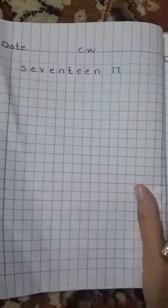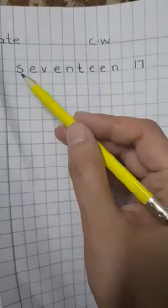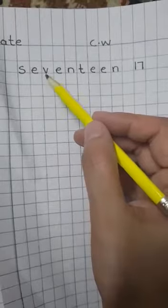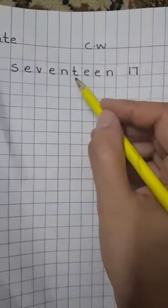So, 17: S-E-V-E-N-T double E-N, seventeen. Write it down: S-E-V-E-N-T double E-N, 17.